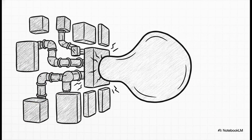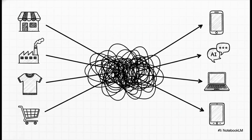Why do we even need something new? The problem is that our current e-commerce plumbing just wasn't built for this new world — it wasn't designed for the kind of conversational, AI-driven shopping that we're all starting to expect. This is the core of the problem: it's called the N-by-N integration bottleneck. Every single business on the left would have to build a completely separate custom connection for every single AI platform on the right. It's slow, expensive, and it grinds innovation to a halt.